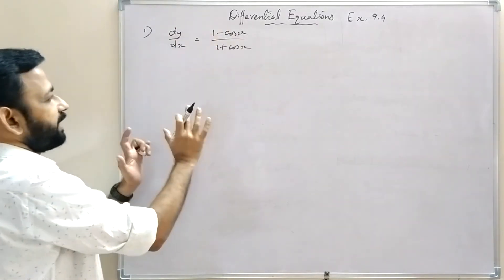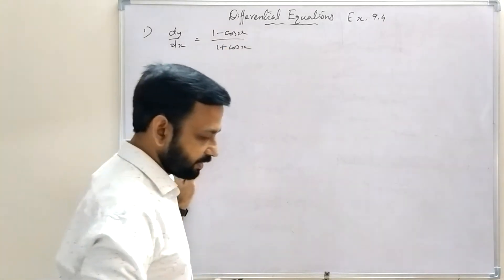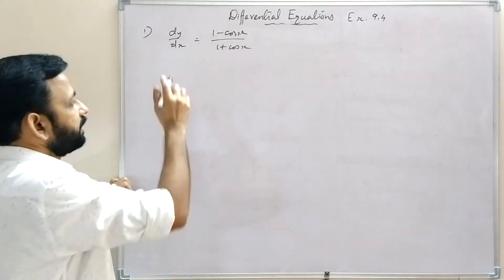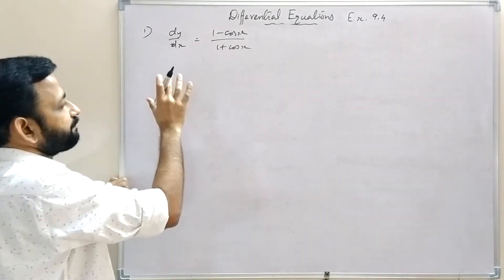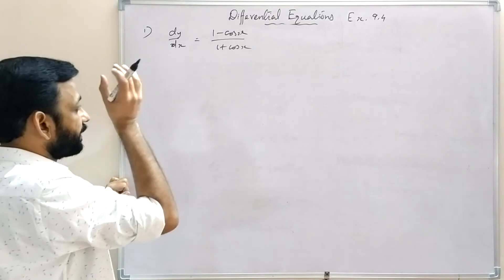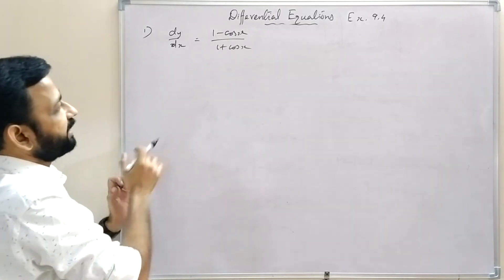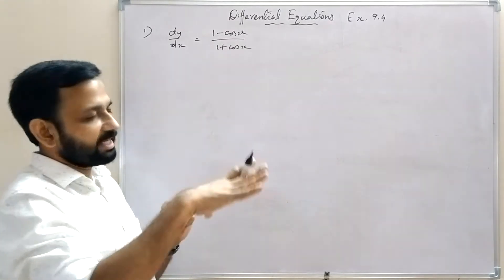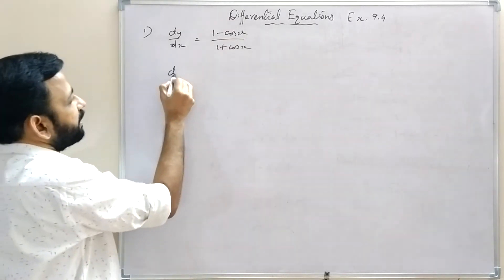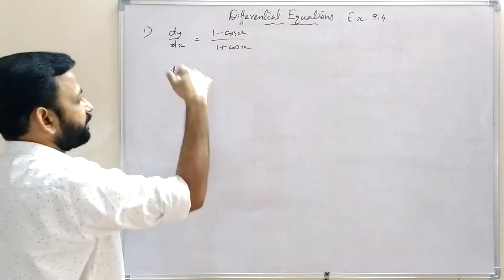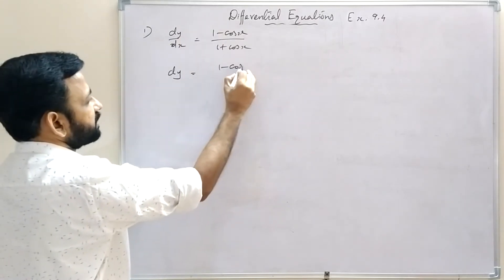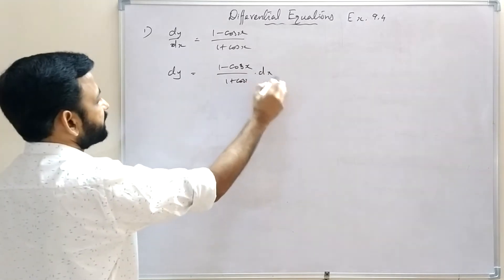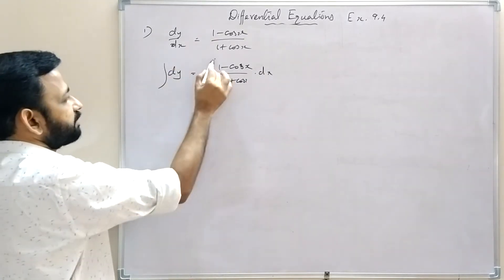For dy/dx = (1 - cos x)/(1 + cos x), we separate variables: dy = [(1 - cos x)/(1 + cos x)] dx. There is no y term here. Now we can integrate both sides.